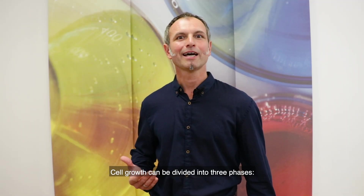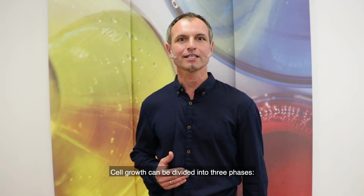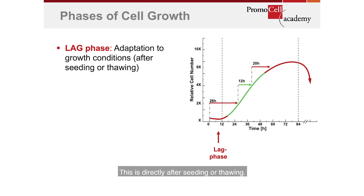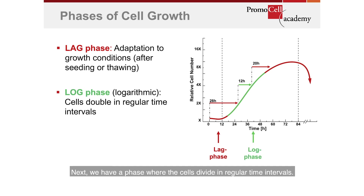Cell growth can be divided into three phases. First of all there is a lag phase, directly after seeding or thawing. The cells have to attach and adapt to the new growth conditions. Next, you have a phase where the cells divide in regular time intervals — this is the logarithmic growth phase, the so-called log phase.